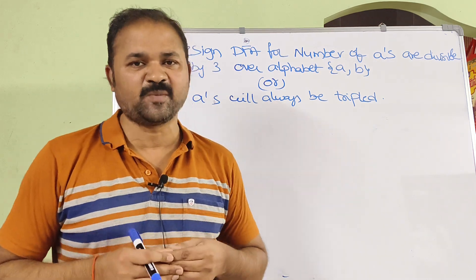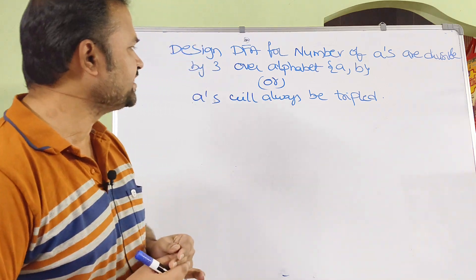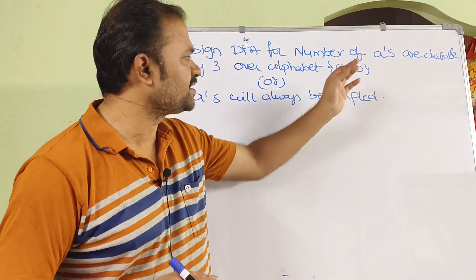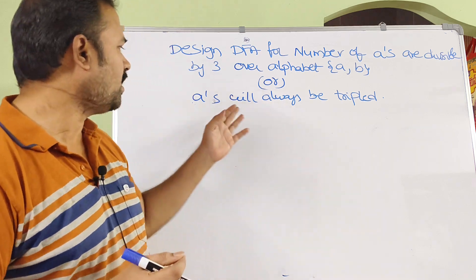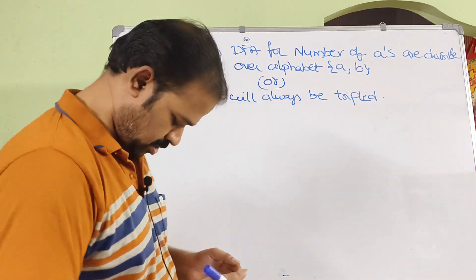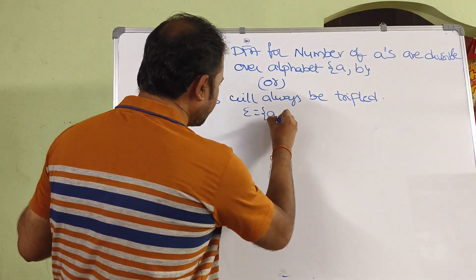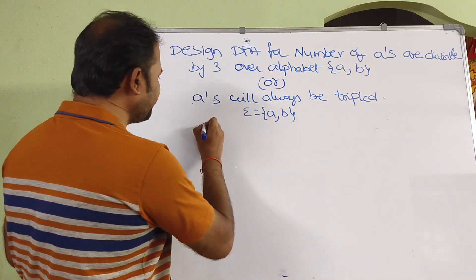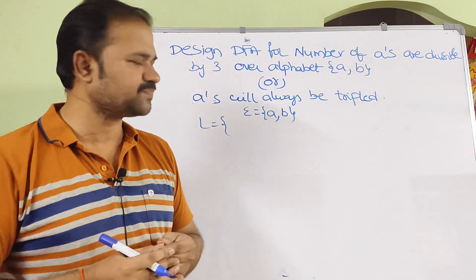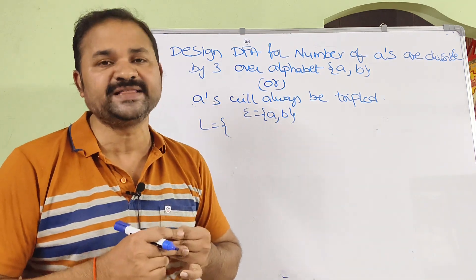Let's see this problem. Design a DFA for the number of A's which are divisible by 3, over the alphabet {A, B}. Here sigma is A comma B. Let us write the language. We know that a language means a collection of strings. So here, what is the constraint? The number of A's must be divisible by 3.